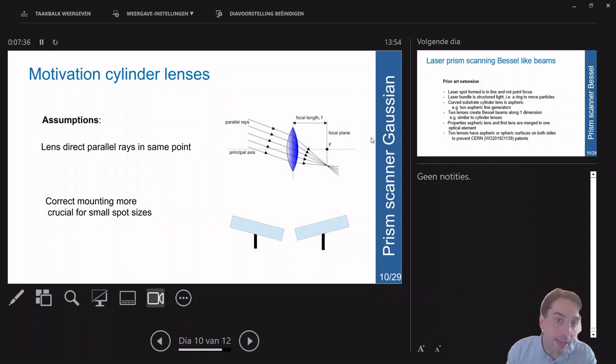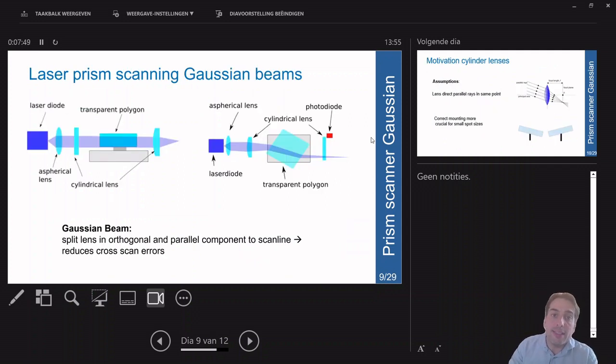If we place a lens behind the prism, this cross aberration would be removed, but it would also remove the functioning of the prism as a whole. That's why I divided it into two cylinder lenses: one which acts orthogonal and one which is parallel to the scan line.